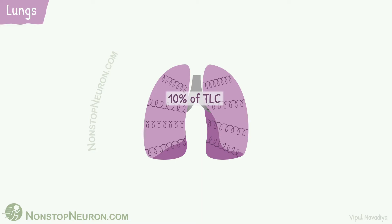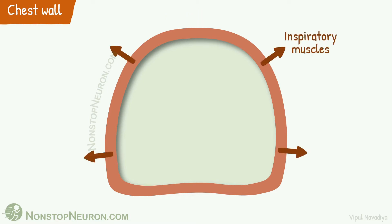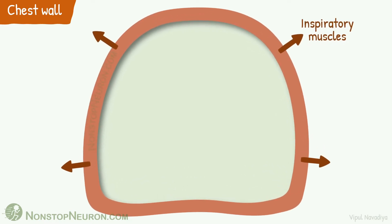When no force is being applied, lung volume is about 10% of total lung capacity. Now let's see properties of chest wall. At resting position, chest volume is about 60% of total lung capacity. Inspiratory muscles can expand the chest, and when expanded, the chest wall has a tendency to recoil inward.